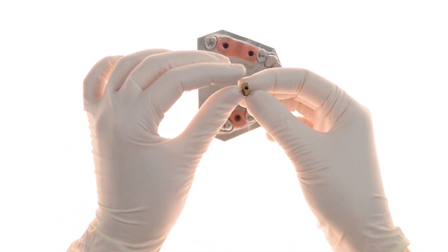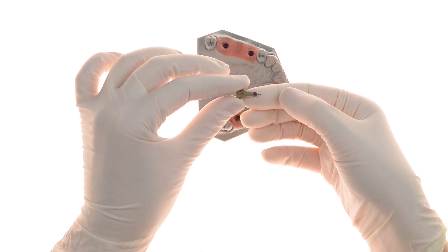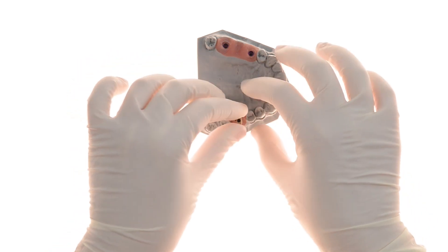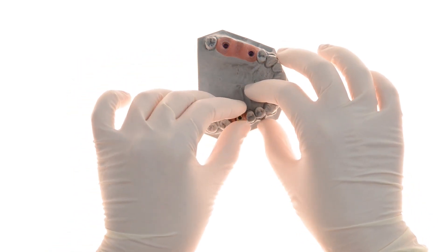This is the unique MIS scan post used with the EasyBase. It is placed with its narrower side facing the direction of the angulated screw channel.